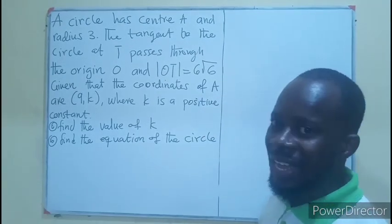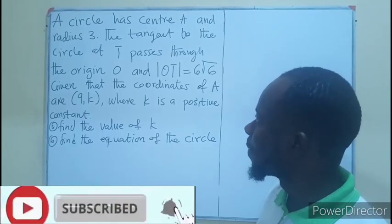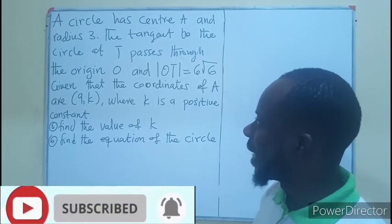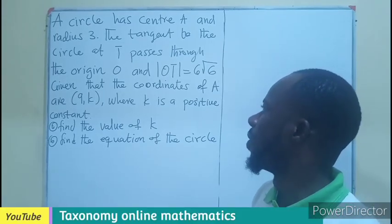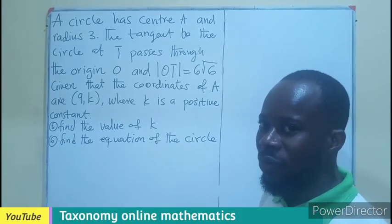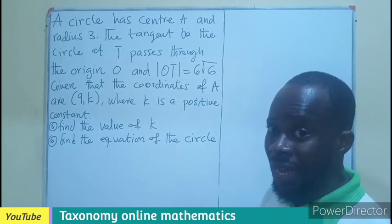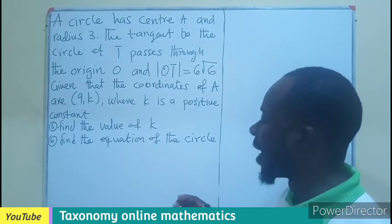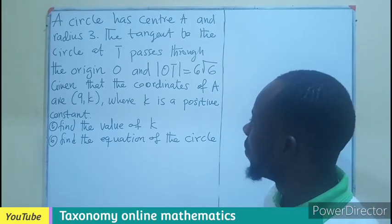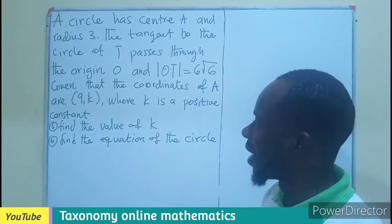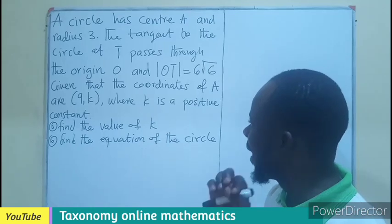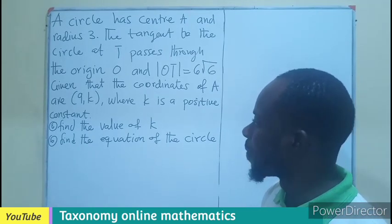A circle has center A and radius 3. The tangent to the circle at T passes through the origin O, and the length OT, which is the length of the tangent, is given as 6 root 6. Given that the coordinate of A, which is the center, is 9 and K, where K is a positive constant.